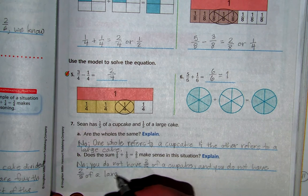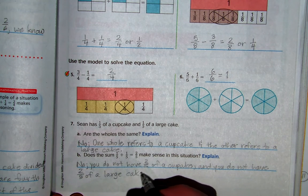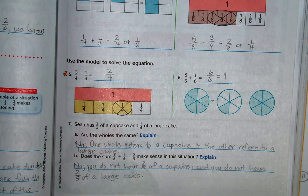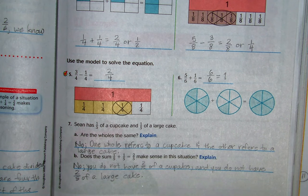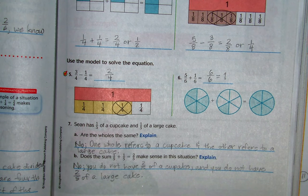They're not the same thing, so you can't make, you can't add those fractions together to make sense. When we're adding fractions, they all have to be part of a whole.